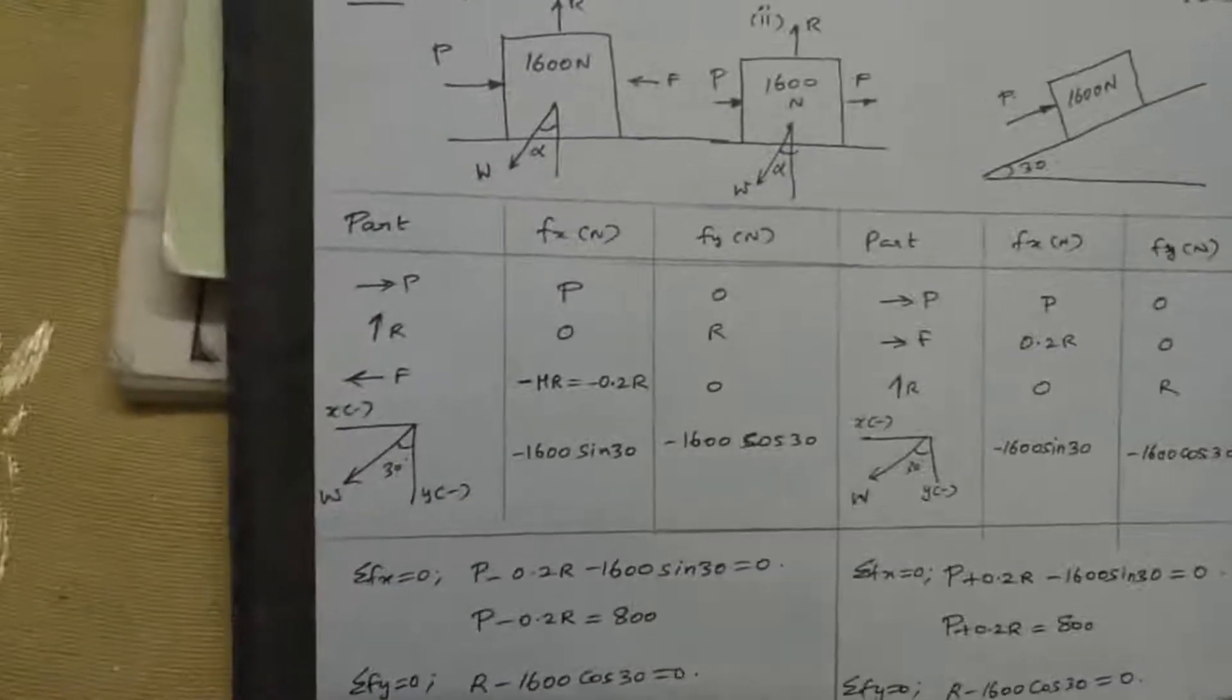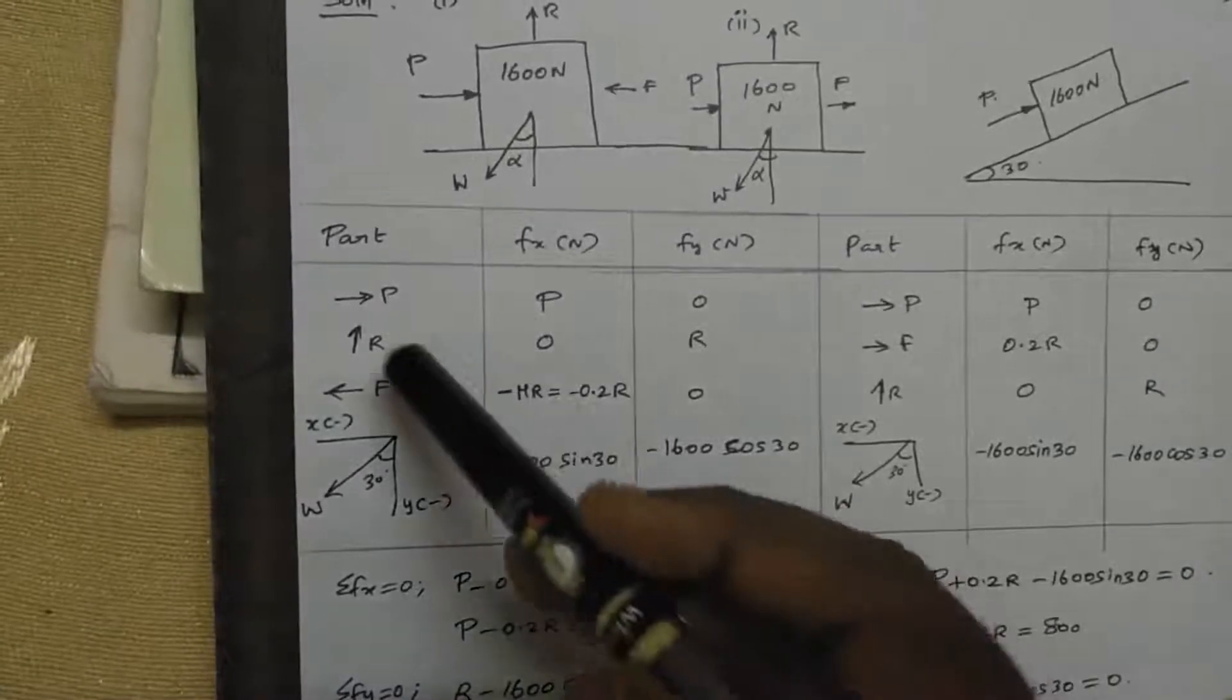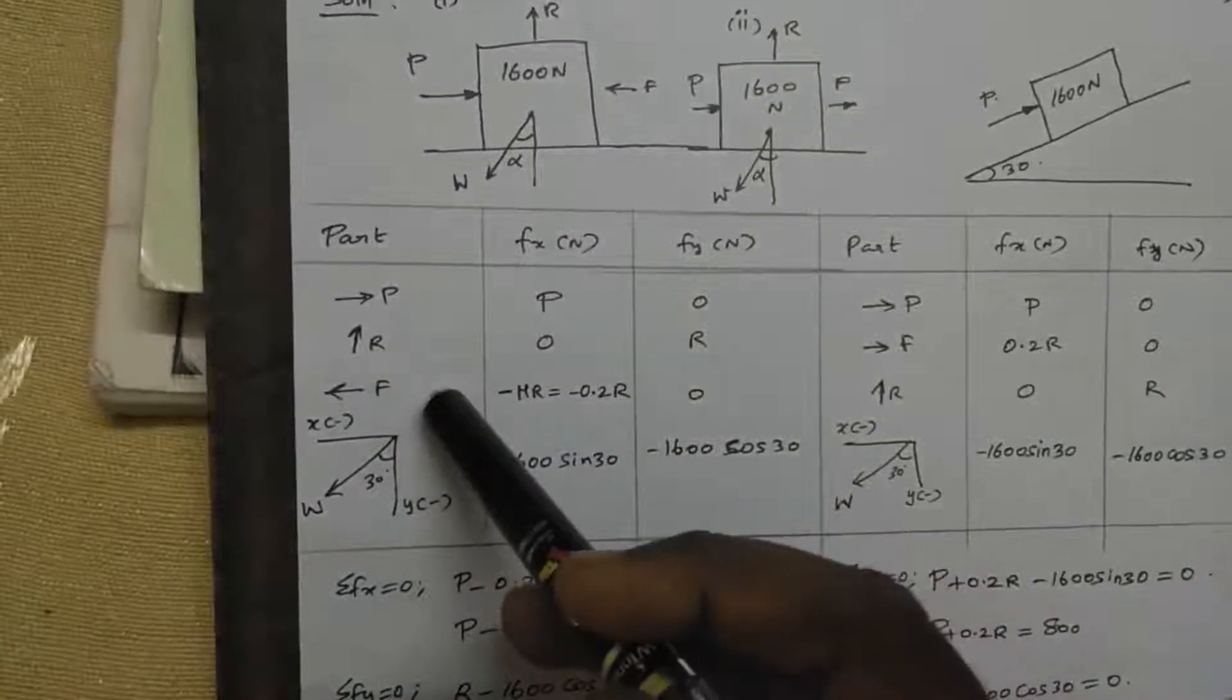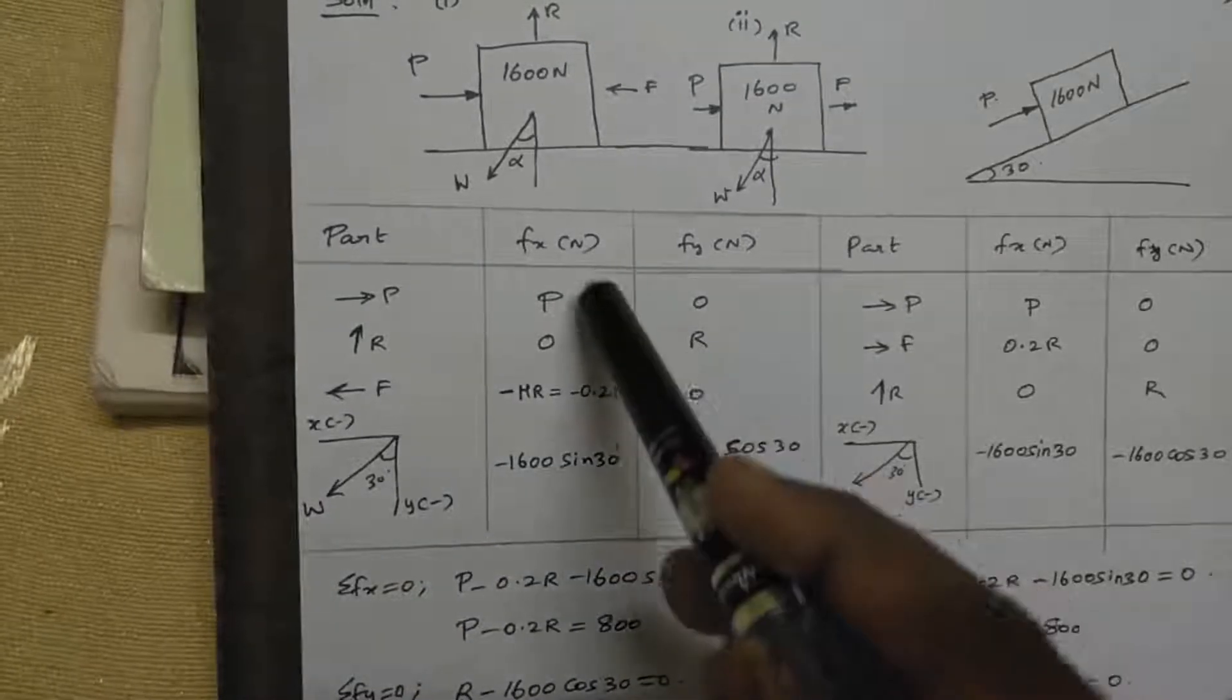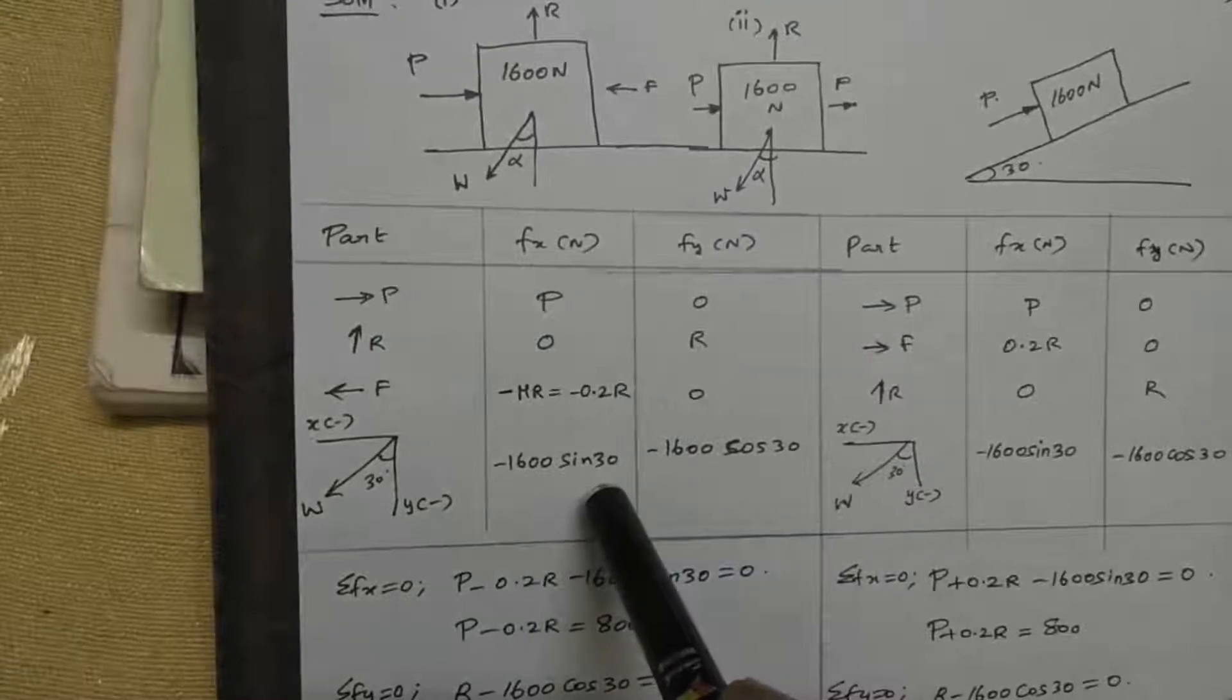Regarding the free body diagram for first case: capital P, capital R, capital F, and W. W is at 30 degrees.